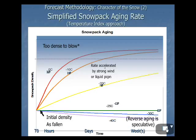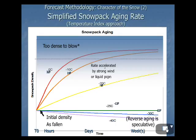Here's a slide on simplified snowpack aging rate. The snowpack becomes more dense, and that is accelerated by strong wind or liquid precipitation, but it's mostly affected by temperature. If your snowpack is subject to 32 degrees Fahrenheit or greater temperatures, it's going to become pretty dense pretty rapidly and will eventually probably be too dense to blow around. Knowing the snowpack density and incorporating that into modeling based on forecasted temperatures in GFE would be beneficial to this blowing snow model.